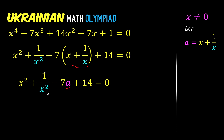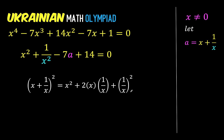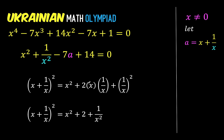We still have the complicated expression x squared plus 1 over x squared. To handle this, let's try squaring x plus 1 over x. Squaring this gives us x squared plus 2 times x times 1 over x, which is 2, plus 1 over x squared. Notice that x squared and 1 over x squared appear here — there's just an extra constant of 2.